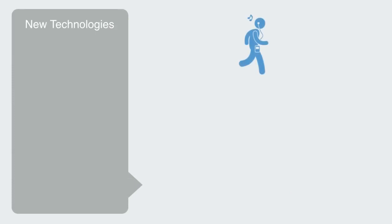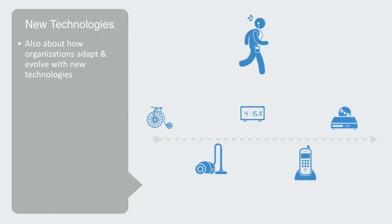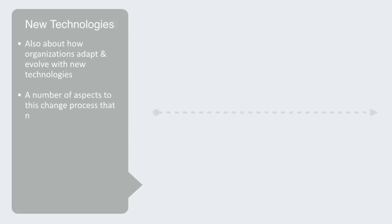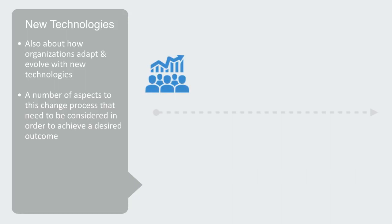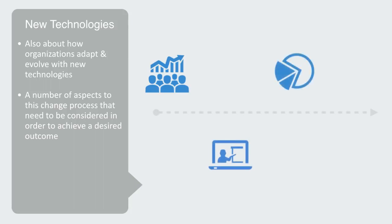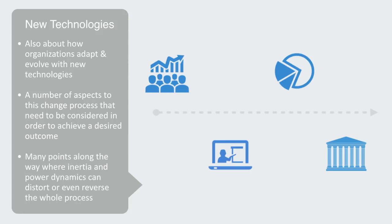The domain of socio-technical systems is not just about how people interact with pre-existing technologies, but also about how organizations adapt to and evolve with new technologies. Ever since the advent of the industrial revolution, social organizations have been subjected to continuous technological change, requiring us to adapt to new systems and new ways of working on a regular basis. There are a number of different aspects to this change process that need to be considered, such as identifying and setting the system's goals, taking into consideration the perspective of multiple stakeholders, the training of new operators, the integration of subsystems into the whole, and the stabilization of new patterns of working. And of course, there are many points along the way where inertia and power dynamics can distort or even reverse the process.